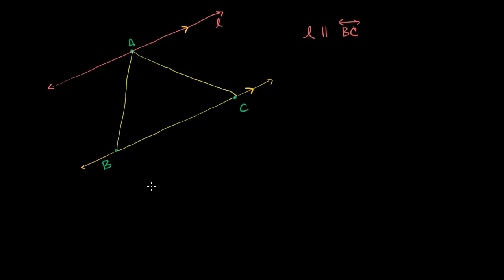The reason I do that is the two other sides of the triangle become transversals for these two parallel lines — they intersect those two parallel lines. And given one line and a point off that line, there's always a unique parallel line through that point. So I want to think of line segment AB and line segment AC as transversals of those two parallel lines.